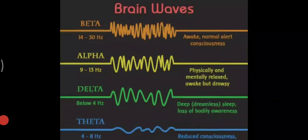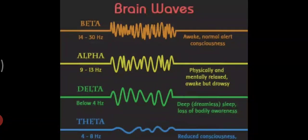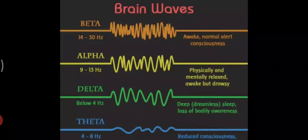Alpha brain waves have a frequency of about 9 to 13 hertz and are dominant during quietly flowing thoughts and in some meditative states. Alpha is the power of now, being here in the present. Alpha is the resting state for the brain. Alpha waves aid overall mental coordination, calmness, alertness, mind-body integration, and learning.